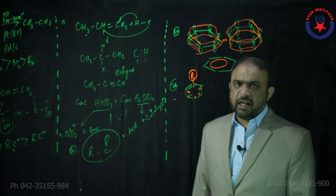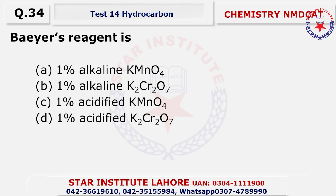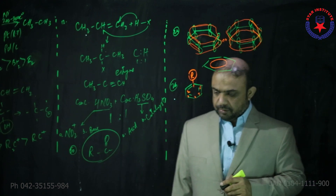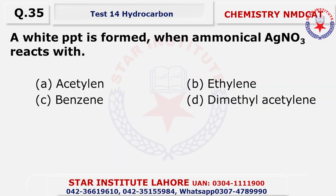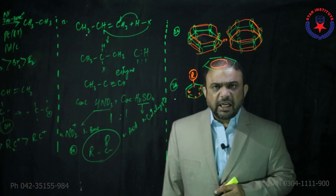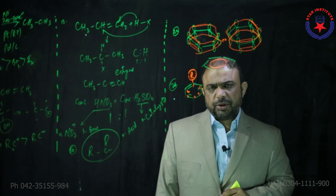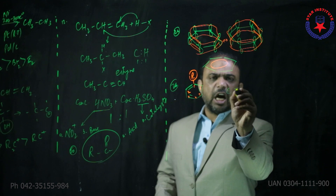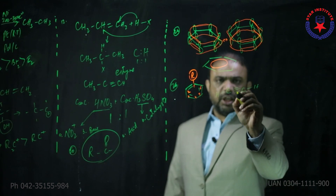Question 33: Raney nickel is obtained by treating a nickel-aluminium alloy with sodium hydroxide. It is used to check the degree of unsaturation in a molecule. Question 35: a white precipitate is formed by ammoniacal silver nitrate with acetylene — this is disilver acetylide precipitation, which is the identification test known as the acidic nature of ethyne.